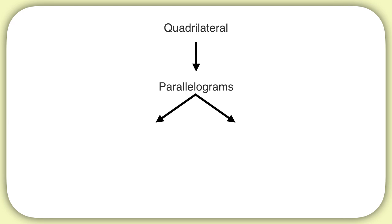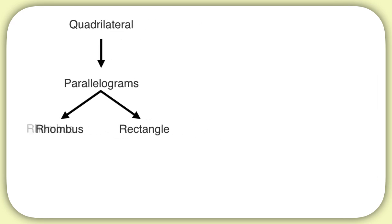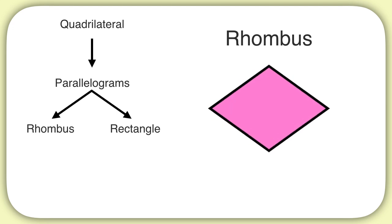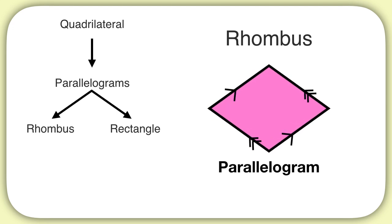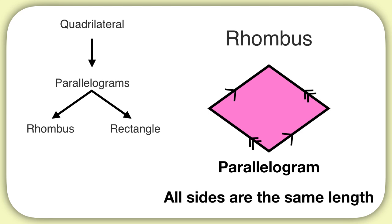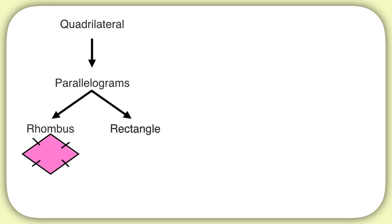Sometimes a parallelogram can be called a rhombus, or sometimes a rectangle. A rhombus looks like this. It's a parallelogram — it has two sets of parallel sides. But in addition, all of the sides are the same length. We can show that by putting one of these dashed lines on each side. So that's a rhombus.